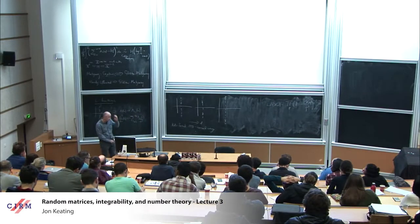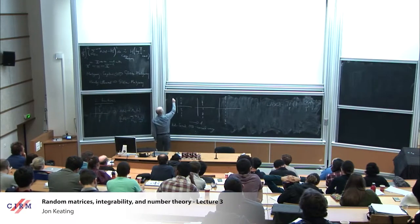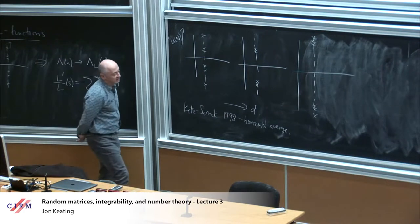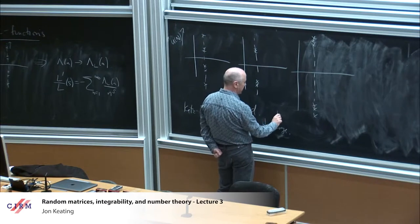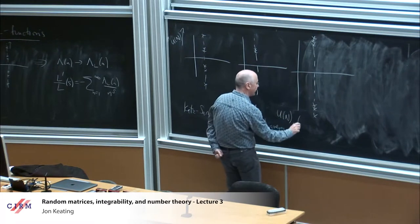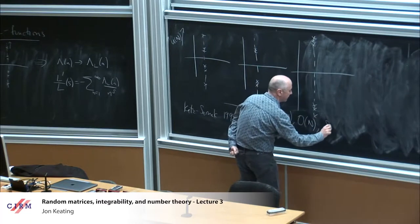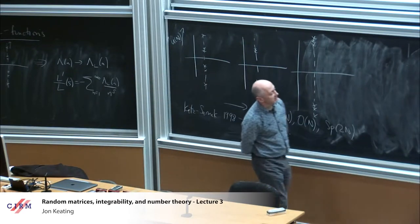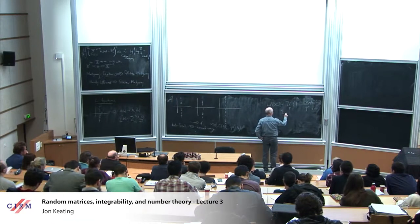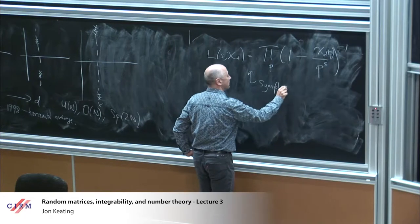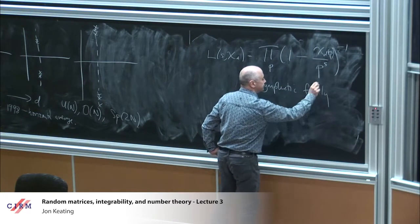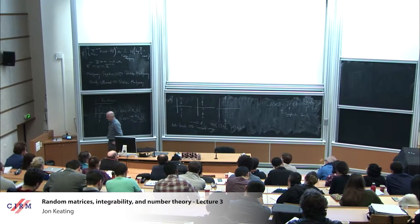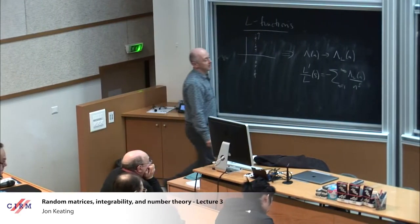It was realized by Katz and Sarnak that if we average vertically, you always get the unitary group. But if you average horizontally, you can get — depending on which family of L-functions you take — either the unitary group, the orthogonal group, or the symplectic group. In particular, the family of Dirichlet L-functions forms a symplectic family.